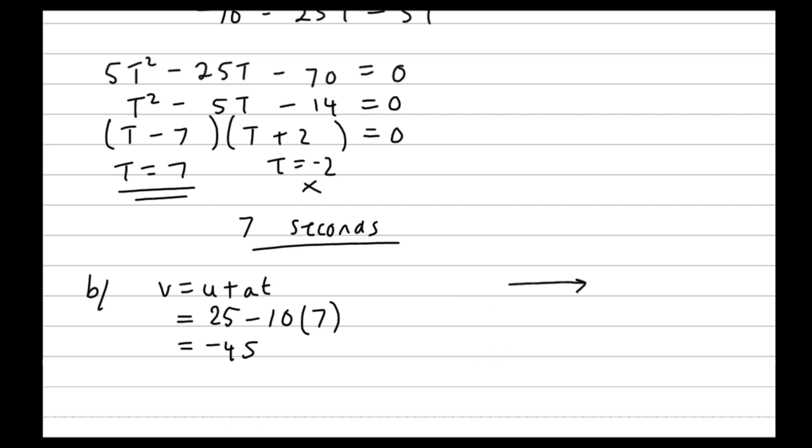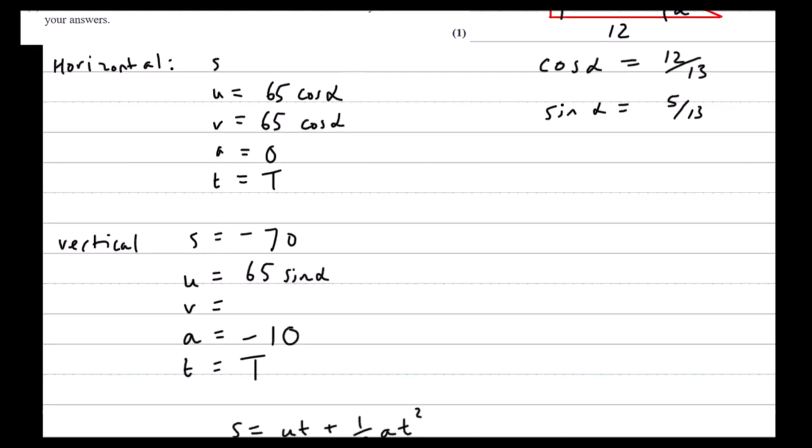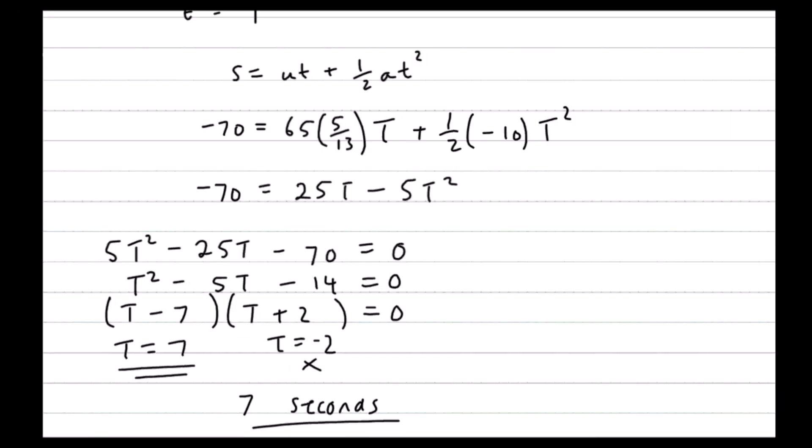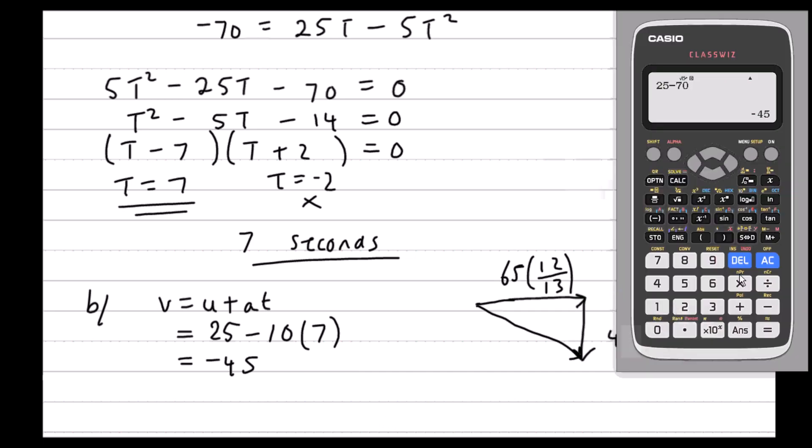I'm going to draw that slightly differently. I've got down 45, and across I've got 65 cos alpha, which is 12 thirteenths of 65. We want to know the speed, which is like the hypotenuse. 12 thirteenths of 65 is 60.